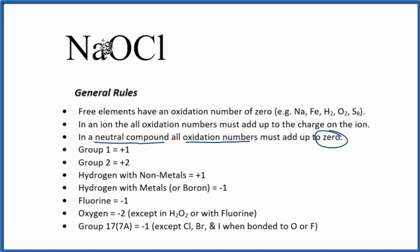For group one elements, sodium, that's in group one. Group one elements will have a plus one oxidation number. Oxygen, if we look at oxygen here, it's always minus two with a few exceptions, so this is minus two, and then the chlorine,